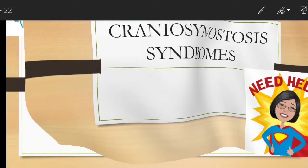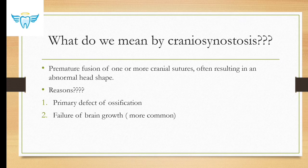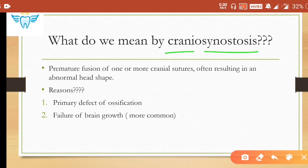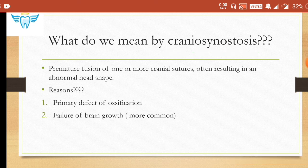Let's get started. What do we mean by craniosynostosis? Let's break this word into two parts: 'cranio' simply means cranial bones or part of the cranium, and 'synostosis' means fusion of the bones — premature fusion of one or more cranial sutures.